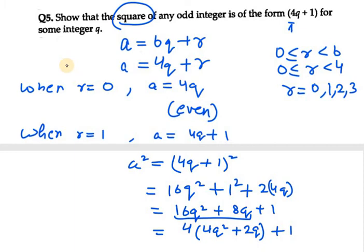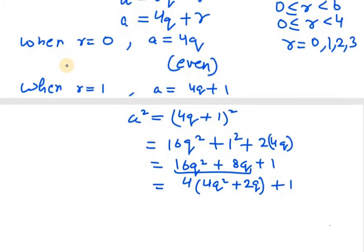In this case, m will be the bracket form, so it will be 4m plus 1, where m equals 4q squared plus 2q. So it can be written in the form 4m plus 1, which is a perfect square.